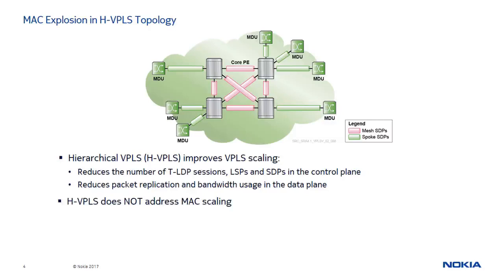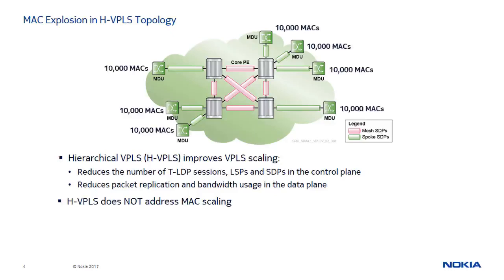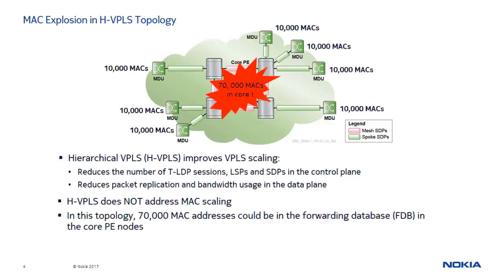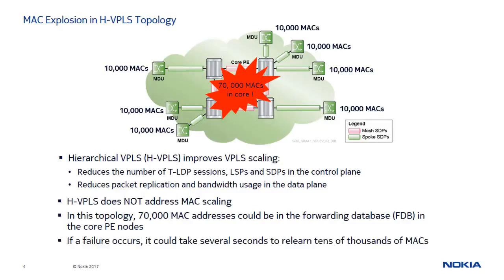When a customer network with 7 MDUs generates a large number of MAC addresses — say 10,000 MACs per MDU — the core PE routers could potentially have up to 70,000 MACs in their FDB. The risk with this topology is twofold: the FDB size could be exceeded, causing all unknown destination packets to flood, and delays in MAC learning and relearning after a topology change can result in excessive flooding or loss of packets, with a potentially service-affecting impact.